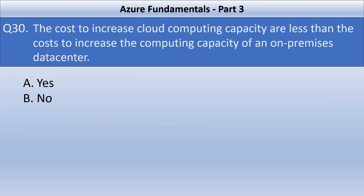Next question. The cost to increase cloud computing capacity is less than the cost to increase the computing capacity of an on-premise data center. Is this statement right or wrong? This is a correct statement. Cloud computing services offer pay-as-you-go pricing models, allowing organizations to scale resources up or down based on demand without the need for significant up-front investments in hardware and infrastructure.